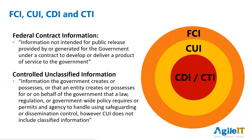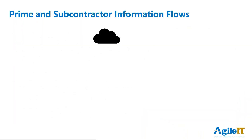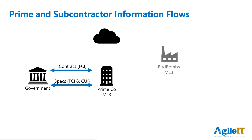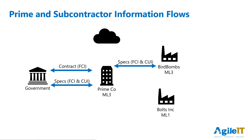If you work in the defense industrial base, this is probably stuff you're familiar with. But I want to talk about the way that prime and subcontractor information flows can go — and I'm going to be a little bit silly. Let's say the government wants to build a chicken-guided missile. Primeco gets the main contract, and because it is certified at maturity level 3, they can work with the government on CUI and FCI. Their subcontractor, Bird Bombs, is also maturity level 3, and they share the plans and specs with them. Boltz, Inc., a smaller subcontractor, is only maturity level 1, so they can't have access to the plans and specifications of the chicken bomber.